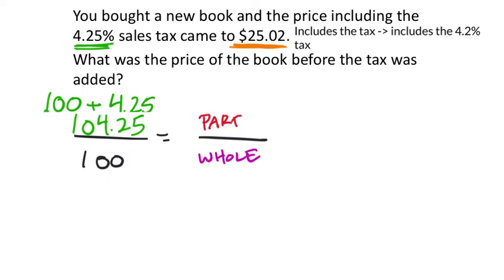What we're missing is the whole because this 104.25% is the percentage which includes the tax. This is the price that includes the tax as well. So my part over here, it will actually end up being the $25.02.